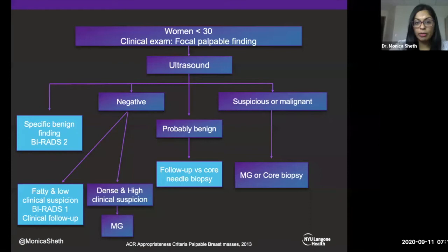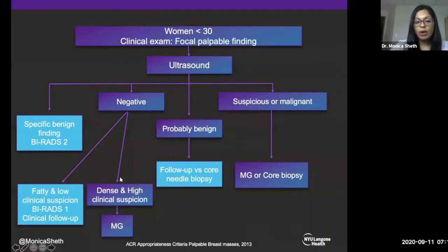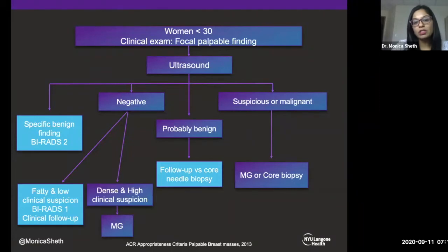Let's go through the algorithm for women less than 30 with a focal palpable finding. We start with ultrasound. If there is a specific benign finding such as a sebaceous cyst, cyst, or lymph node, give it BI-RADS 2 and the patient is done. If the ultrasound is negative and tissue is fatty with low clinical suspicion, it is BI-RADS 1 with clinical follow-up. If tissue is dense with high clinical suspicion, they need a mammogram. If the ultrasound shows a probably benign finding, either follow up in six months or do a core biopsy depending on suspicion and history. If suspicious or malignant on ultrasound, get that mammogram or move directly to a core biopsy.